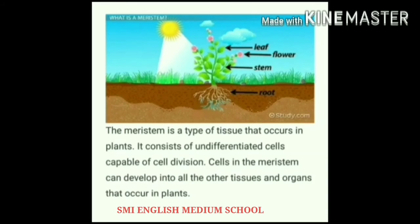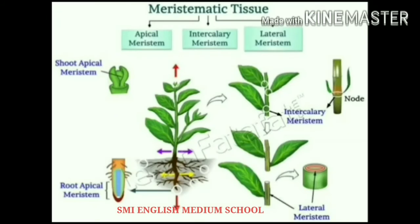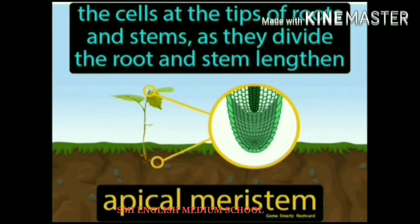Plants grow only in certain specific regions because of meristematic tissues. Based upon the region where they are present, meristematic tissues are divided into apical meristem, lateral meristem, and intercalary meristem. Apical meristem is present at the growing tips of stems and roots and increases the length of the stem and root.